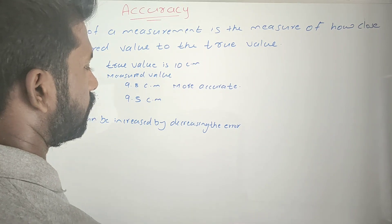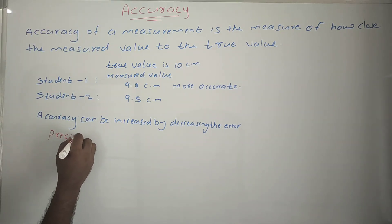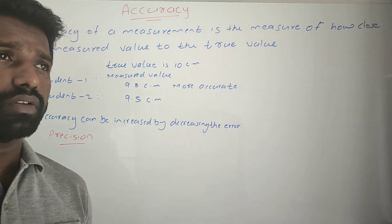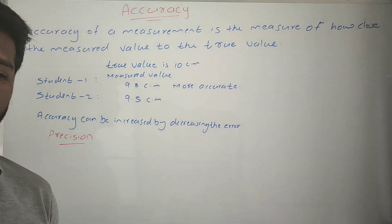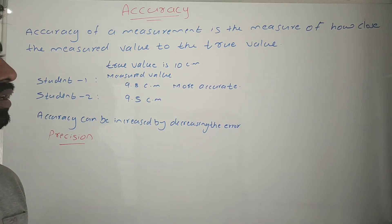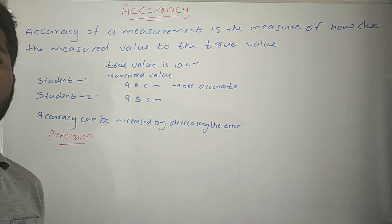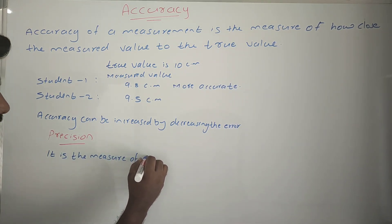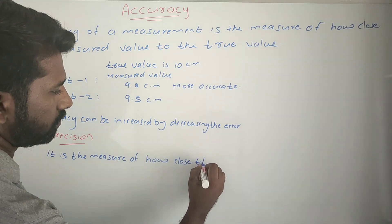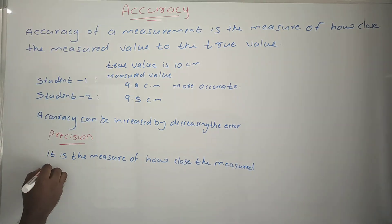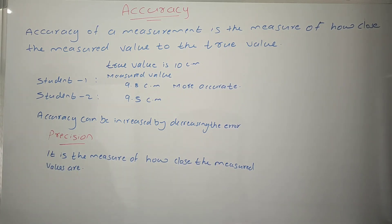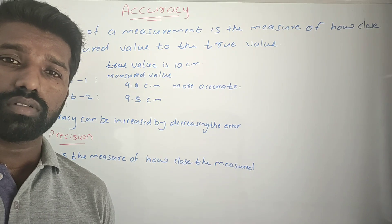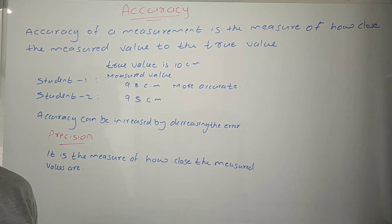Next, we will see about precision. What is precision? Precision is a measure of how close the measured values are to each other. It is only about the closeness of the measured values among themselves. If the measured values are very close to each other, that is a more precise measurement.